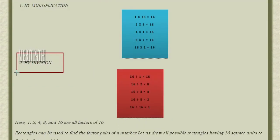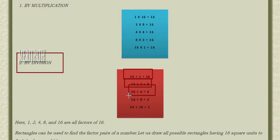Let us find out the factors using division. 16 divided by 1 is 16, 16 divided by 2 is 8, 16 divided by 4 is 4, 16 divided by 8 is 2, and 16 divided by 16 is 1.